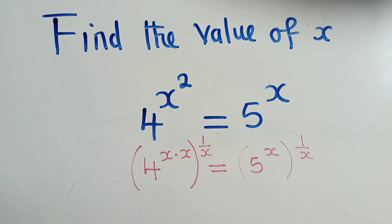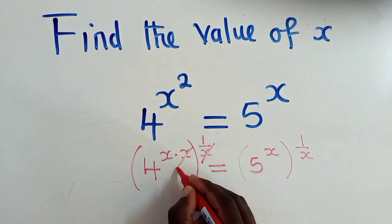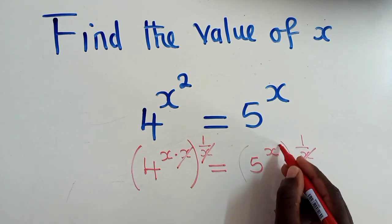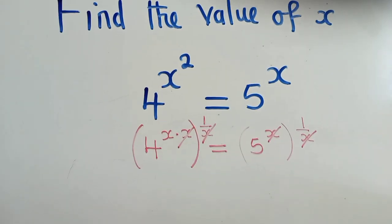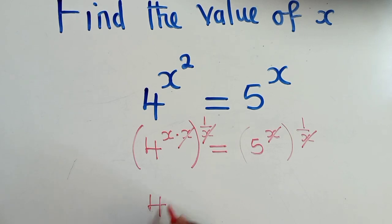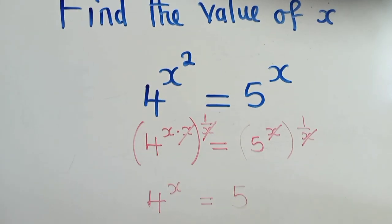Alright, so my idea of doing what I've just done here is because I want to cancel this x under this x on this side, such that the x here and this x will disappear here and here. Okay, so we shall remain with 4 power x is equal to 5. So this is what we have.